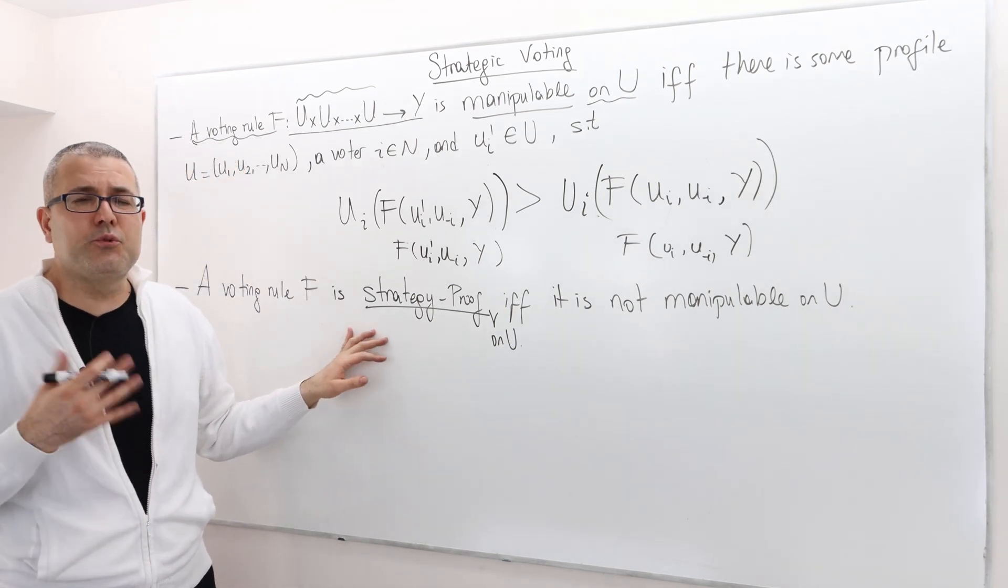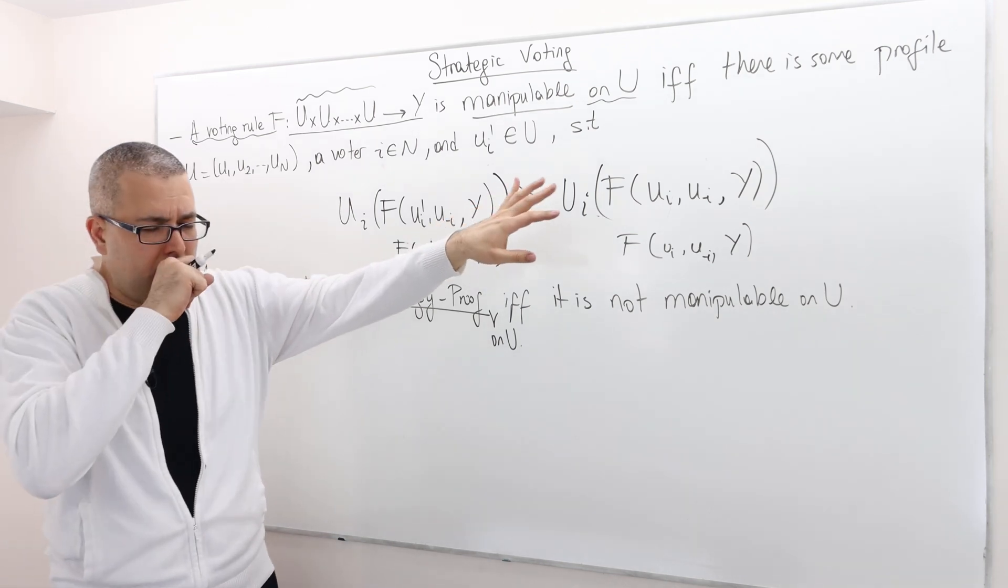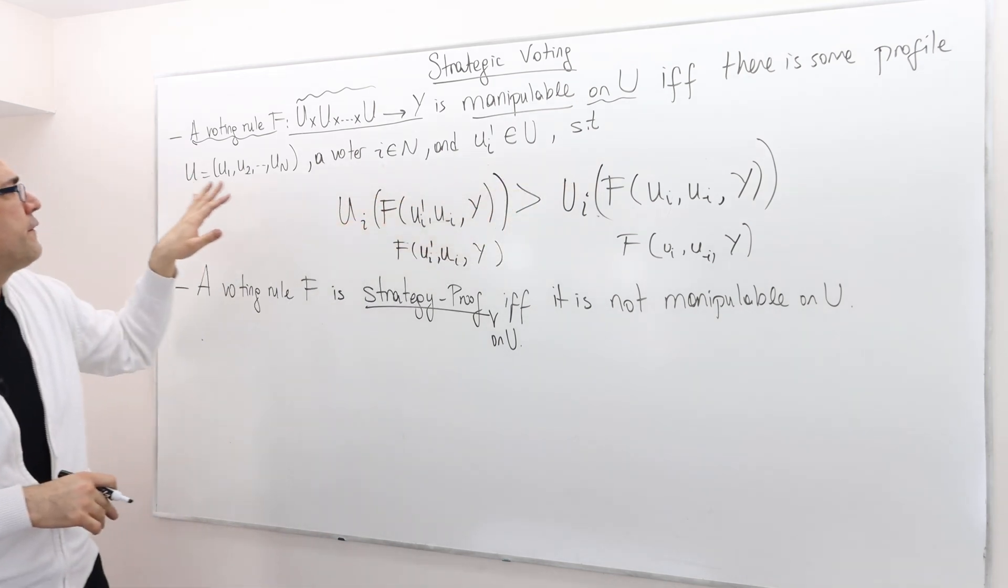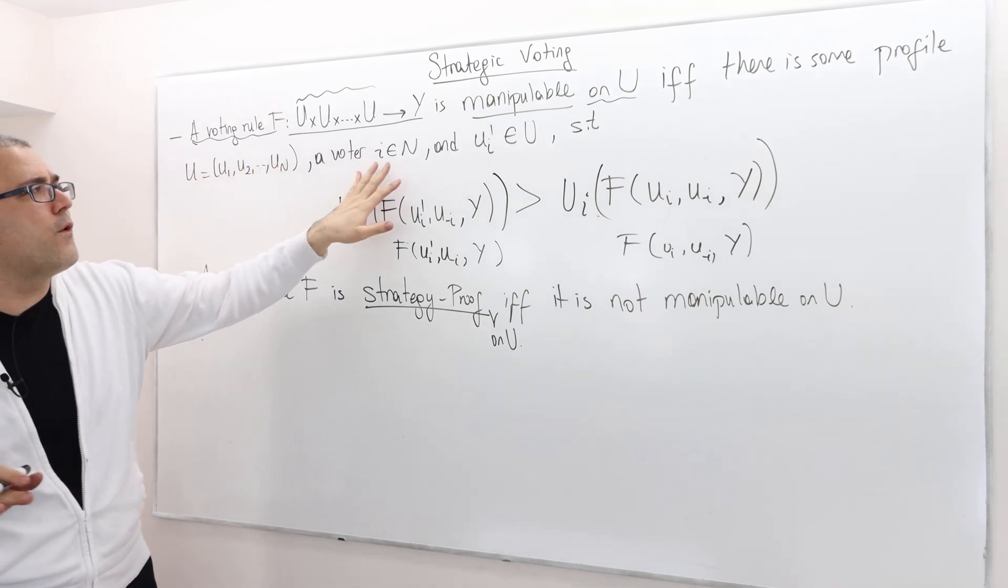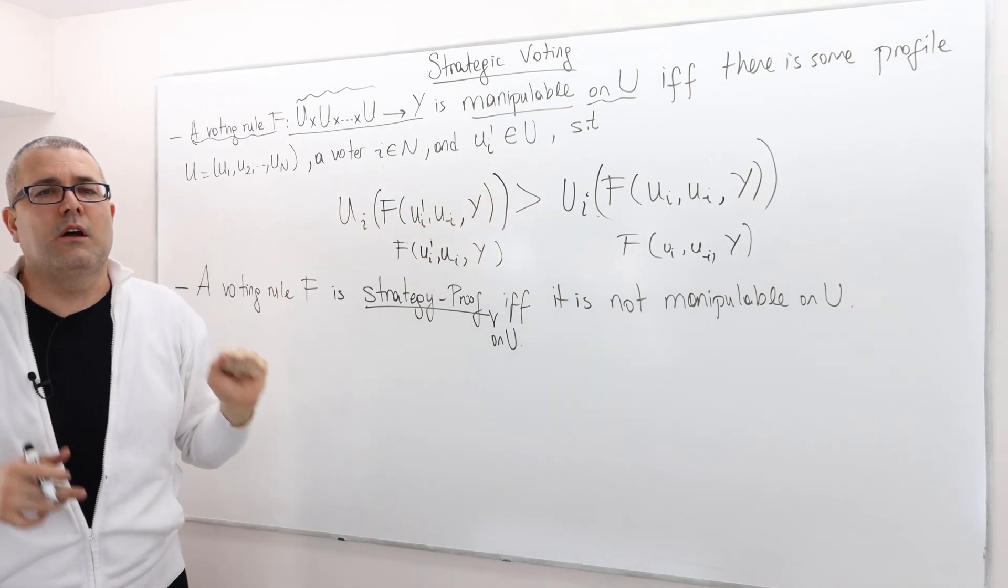Okay. So a strategy proofness basically means there's going to be no preference profile U, no voter I, no UI prime, which this holds.